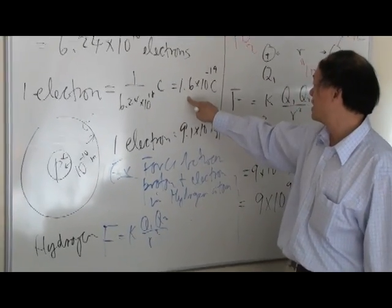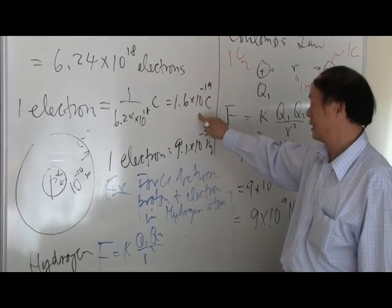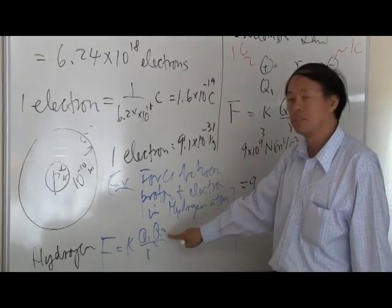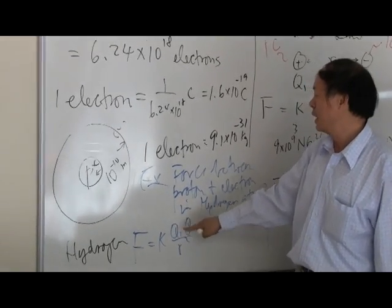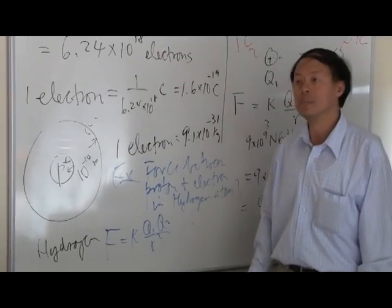Q1 equal to 1.6 times 10 to the minus 19 coulomb. Q2 the same but of opposite charge. And R being 10 to the minus 10 meter.